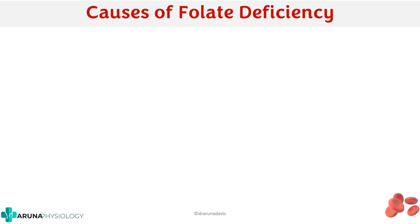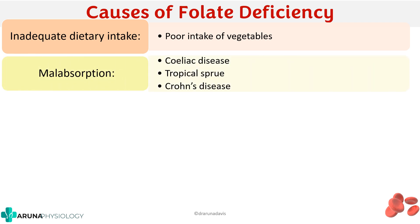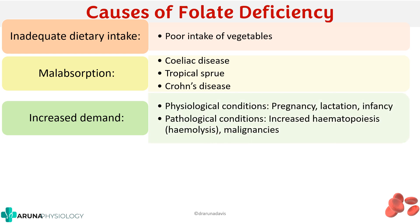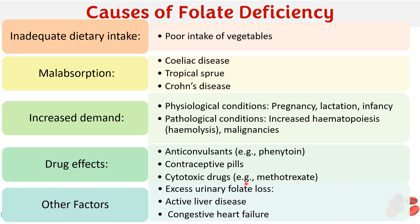What about folic acid deficiency? Inadequate dietary intake, such as poor intake of vegetables, will cause folic acid deficiency. Even if folic acid is ingested, it must be absorbed properly — malabsorption as in celiac disease, tropical sprue, or Crohn's disease can cause deficiency. Increased demand — such as in pregnancy, lactation, infancy, hemolysis, or malignancies — can also cause deficiency. Certain drugs like anticonvulsants, contraceptives, and cytotoxic drugs affect folic acid absorption. Other factors include excessive urine folate loss, active liver disease, and congestive heart failure.